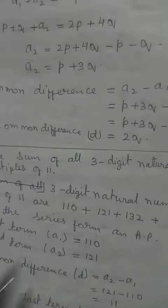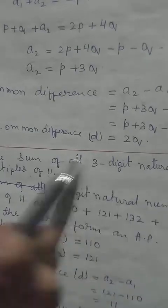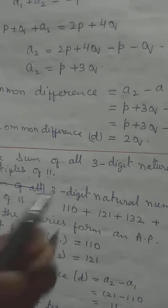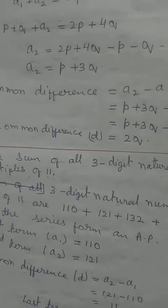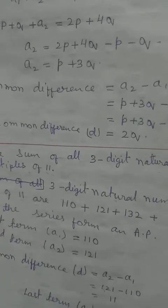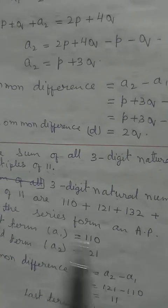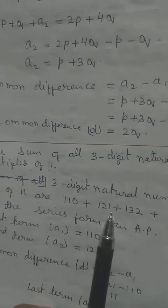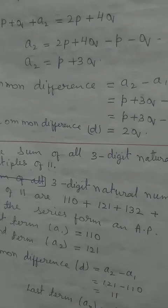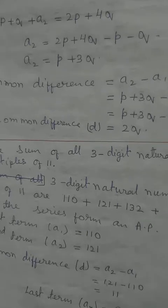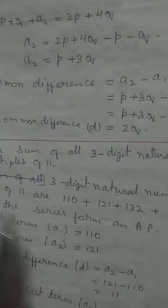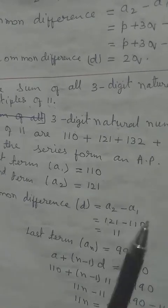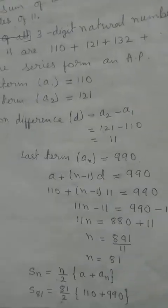The last 3-digit multiple of 11: checking from 999 downward — 999, 998, 997... 990 is divisible by 11. So the first term is 110, second term is 121, last term (A_N) is 990. They form an AP with common difference D = 121 − 110 = 11.